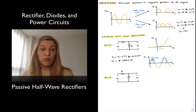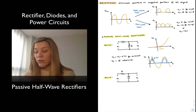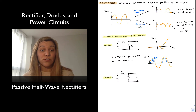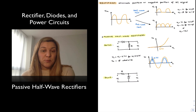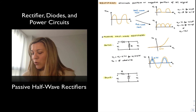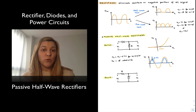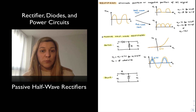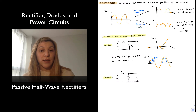Now, 0.7 volts — is that a lot? Is that too little? That's going to depend on our application. If we are dealing with tens of volts, perhaps 0.7 volts is not going to matter. But if we are working with very small signals, or in a precision application where accuracy is important, this circuit is not going to cut it. So we're going to need to look for an alternate solution.